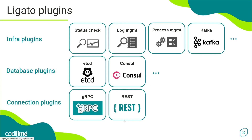The gRPC plugin, in turn, allows external applications and clients to communicate using the gRPC API when interacting with other Legato components. There is also a REST plugin available that provides a general-purpose HTTP server, which can be used by plugins to expose a REST API to external clients and applications.